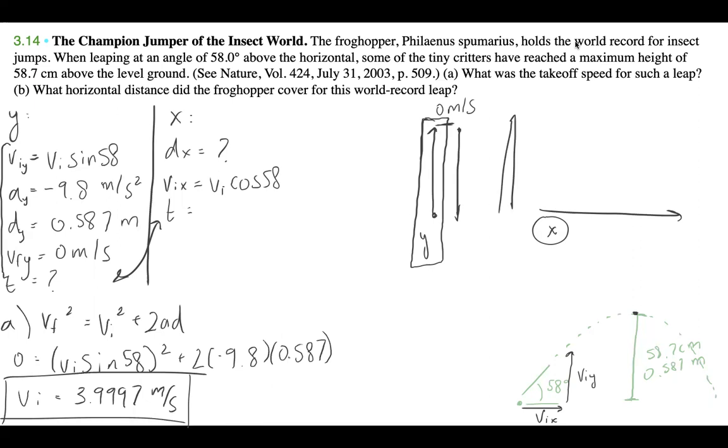What is the horizontal distance? Did the frog hopper cover? What horizontal distance did the frog hopper cover? So remember that to get the horizontal distance, all we need to do is dx is equal to VIX times T. And we have our VI, which is 3.9997. And we're just trying to find our T. So our T, if we figure out our T in Y, we can just use that to get our T in X. And to do that, there's actually two ways.